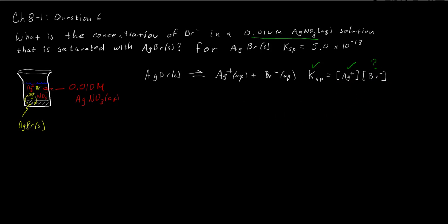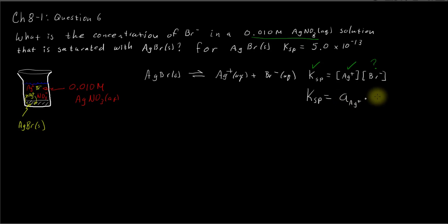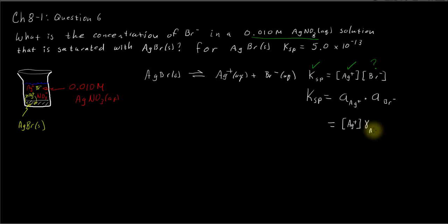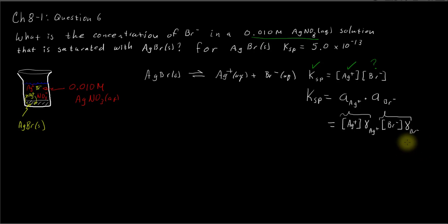What's different in this problem is that we want to account for activity effects — those ionic atmosphere effects. So we're going to write down the thermodynamic solubility product constant, the real Ksp, using activities instead of concentrations. We need the activity of the silver cation and the activity of the bromide ion. Activities are concentrations times the activity coefficient for that particular chemical, so we multiply: silver molarity times its activity coefficient γ, times bromide molarity times its activity coefficient γ.